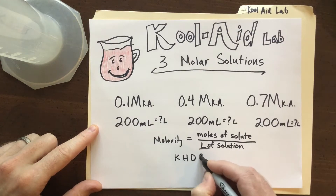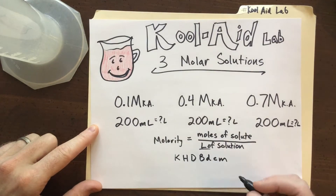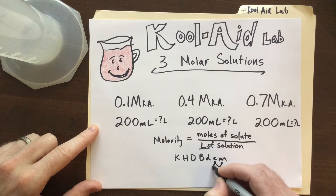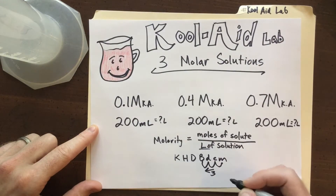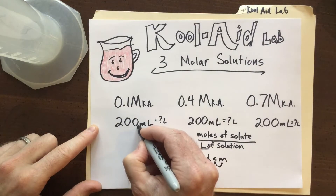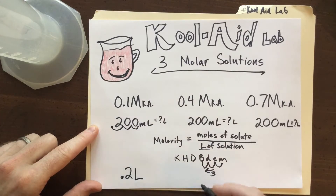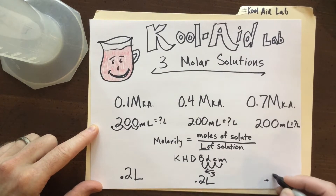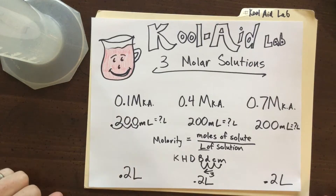We'll write out our metric prefix letters — King Henry Died By Drinking Cold Milk — starting at milli and moving three spots to the left over to the base unit of liters. When we do that, we move our decimal three places to the left on all the numbers, and we get 0.2 liters for each of the solutions that we'll make.